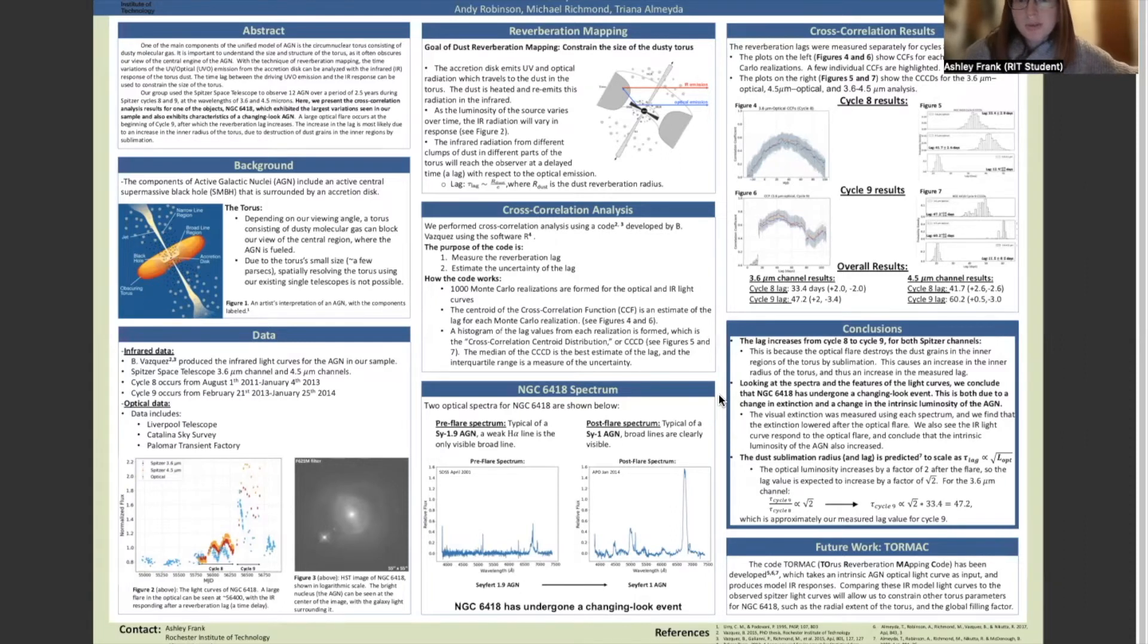Through looking at features in the light curve and features in the spectra, we can see that NGC 6418 has undergone a changing look event, both due to a change in extinction and a change in the intrinsic luminosity of the AGN. If this sounds interesting to you, please take a look at my poster later. Thank you.